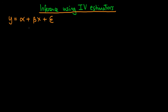In this video I want to talk about how we go about doing inference when we're using IV estimators. We have a linear model between Y and X, and because of endogeneity between X and the error we are using an instrument for our independent variable X. We want to talk about how we actually go about doing inference in these sorts of situations.